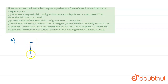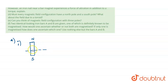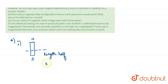Let this be the bar magnet, with north pole and south pole. In the first case, when it is cut transverse, the length of the bar magnet is divided into half — so the length becomes half. What happens to the magnetic moment? The new magnetic moment M' becomes half of the initial magnetic moment.